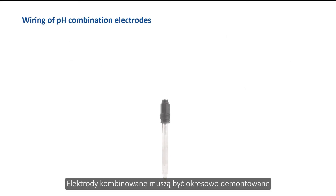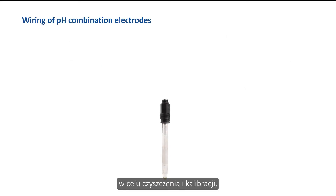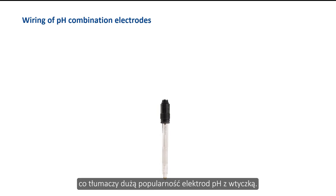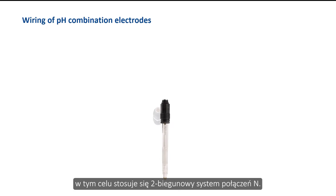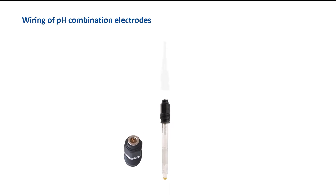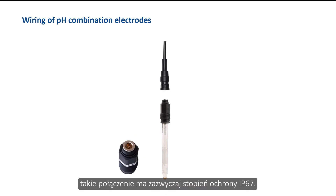Combination electrodes must be unscrewed from the fitting for cleaning and calibration, which explains the great popularity of pH combination electrodes with a connector plug. For combination electrodes without a temperature sensor, the potentials of the measuring system and the reference system must be transferred. The two-pole N connection system is used, and when mounted, this connection usually has protection class IP67.